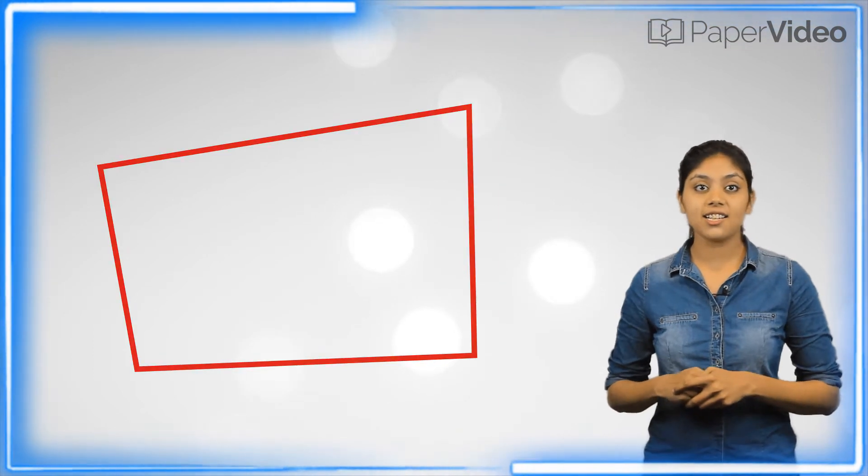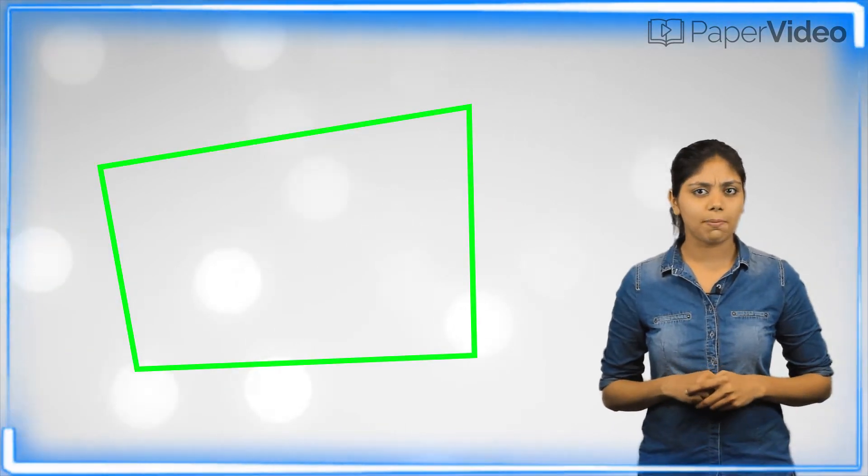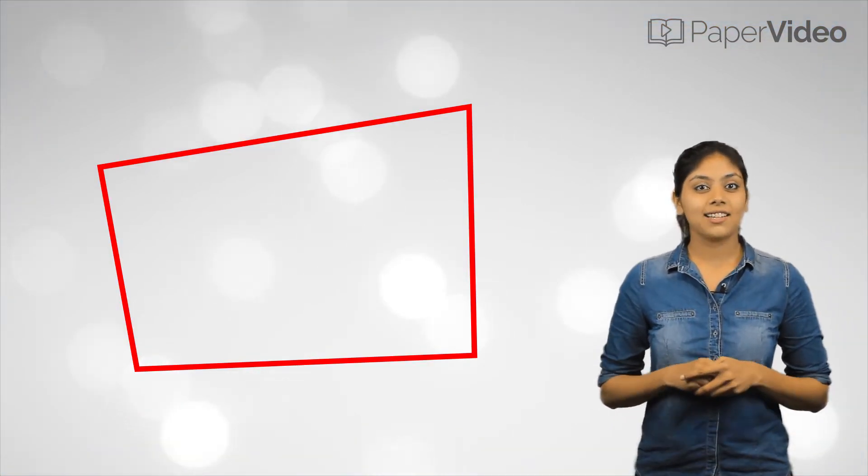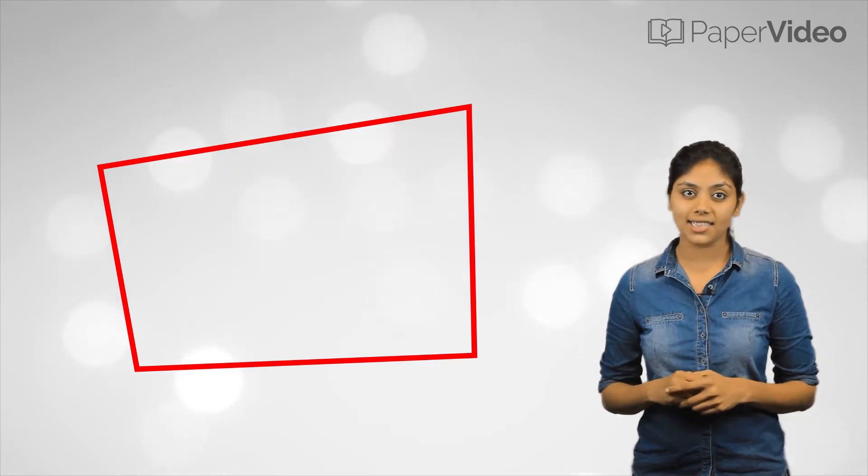If we consider this screen as a plane surface, then can we say that the quadrilateral is dividing this plane into three parts? If yes, then can you identify the parts?